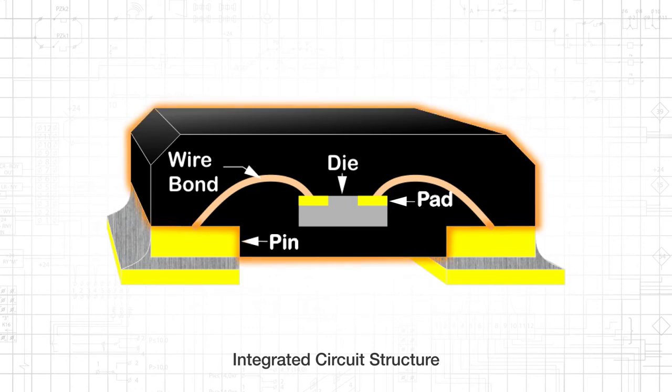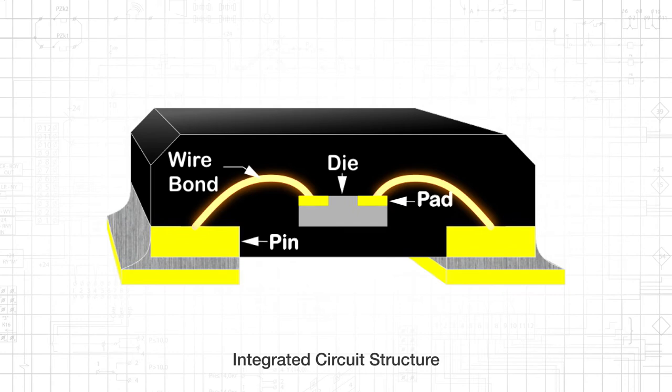The die is enclosed in a package, and bonding wires form electrical connections between the package's terminals, also called pins, and the corresponding pads on the die.